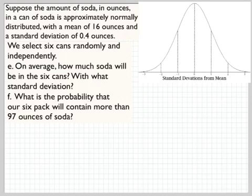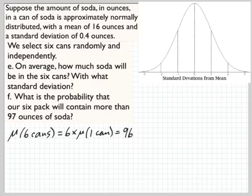On average, how much soda will be in the six cans with what standard deviation? So the average, the mean is straightforward. The mean for six cans is just six times the mean for a single can. So that's six times 16, so 96 ounces. So on average, this randomly selected six pack will have 96 ounces of soda. But not every six pack will have 96 ounces of soda. Some will have more, some will have less. There's a standard deviation.